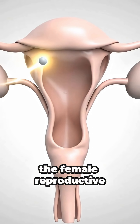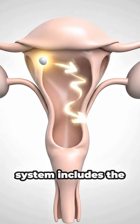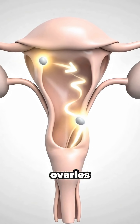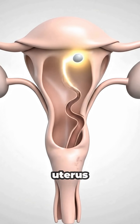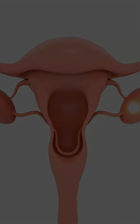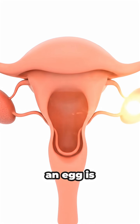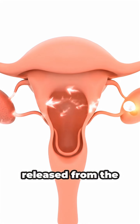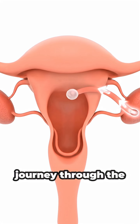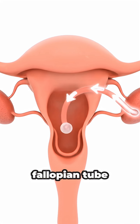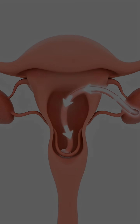The female reproductive system includes the ovaries, fallopian tubes, and uterus. An egg is released from the ovary and begins its journey through the fallopian tube.